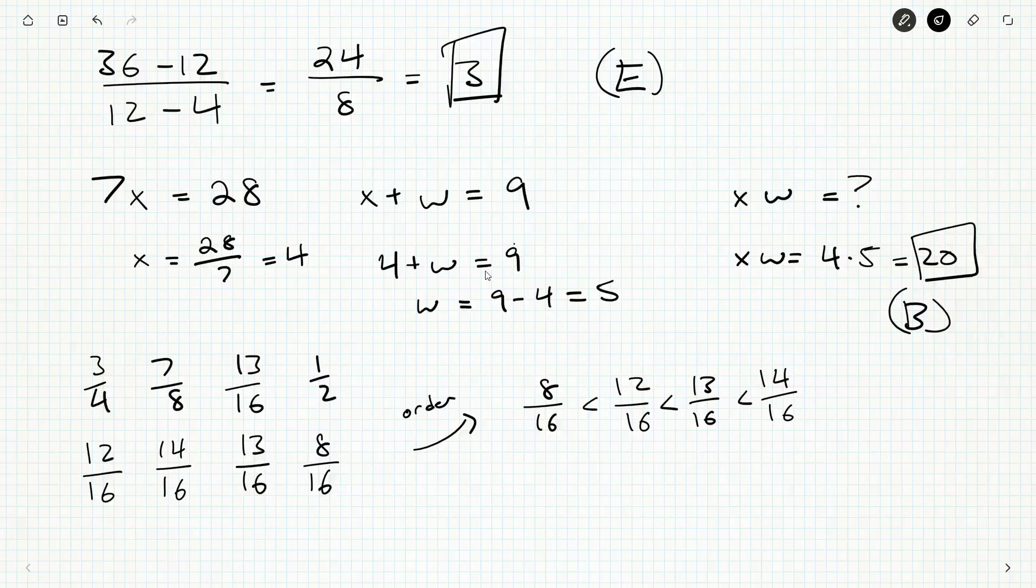Once they're ordered, we take the largest and the smallest and find the difference. We don't need to do anything because they already have a common denominator, so we can quickly compute: fourteen over sixteen minus eight over sixteen equals fourteen minus eight, all over sixteen.